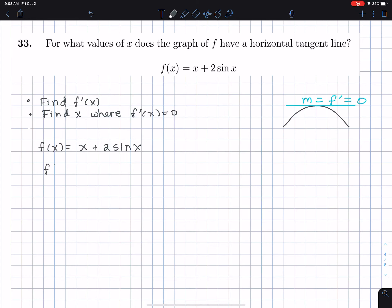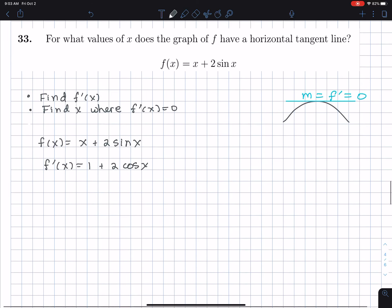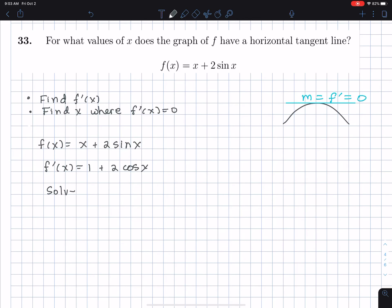The derivative is what? Well, the derivative of x is 1 and the derivative of sin(x) is cos(x). Now I solve f'(x) equals zero. The derivative is the slope of the tangent line and our horizontal tangent line has slope zero. So 1 + 2cos(x) = 0, which gives 2cos(x) = -1, leading to cos(x) = -1/2.